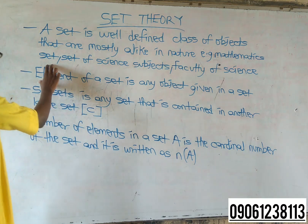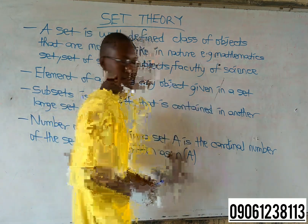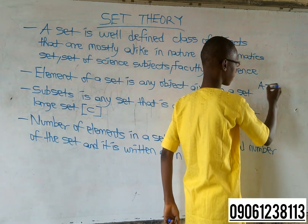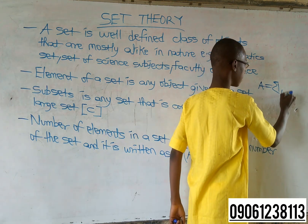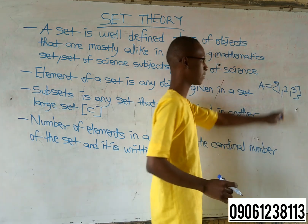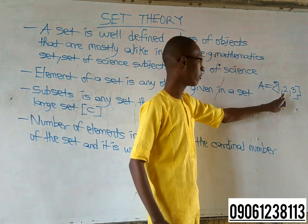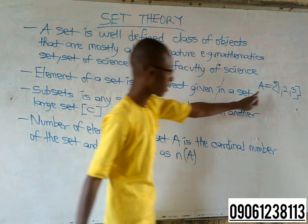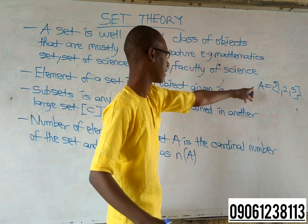An element of the set is any object given in a set. Set A is equal to one, two, three. One, two, three. So I want to take a look at the set. One, two, three — these are the elements in set A.